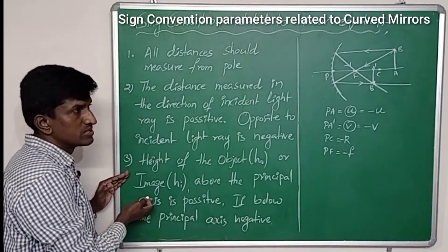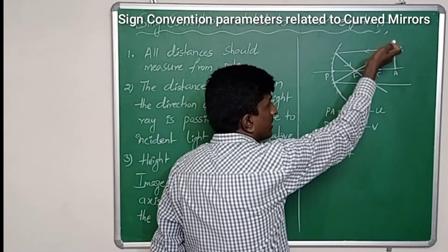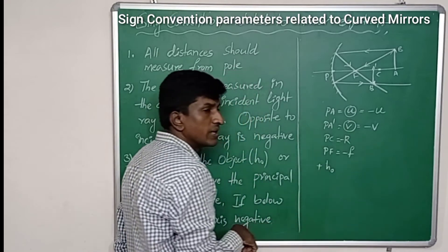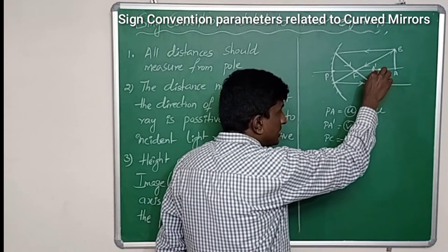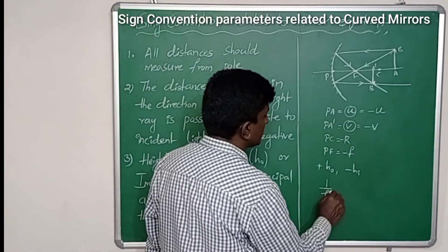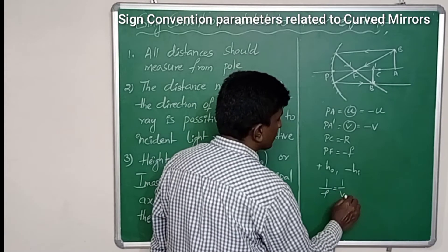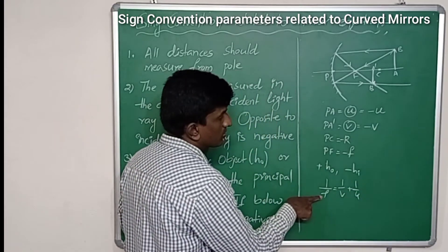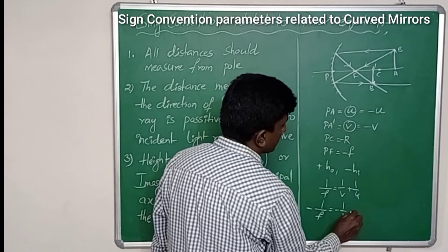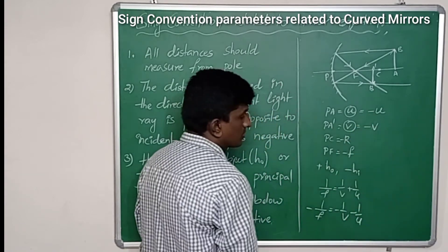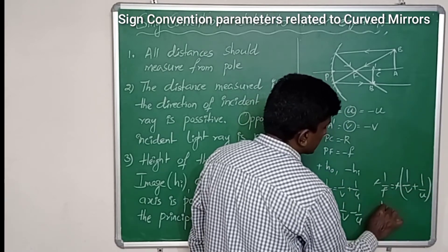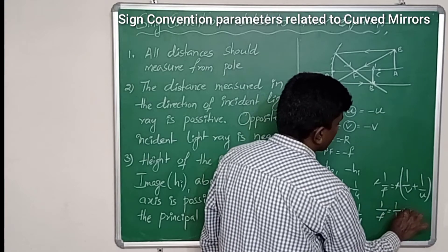For the heights: the object is above the principal axis, so the height of the object h_o is taken as positive. The height of the image is below the principal axis, so it is taken as negative. If you substitute these values in the mirror equation 1/f = 1/v + 1/u, with f as −f, v as −v, and u as −u, taking out the minus sign common gives −1/f = −(1/v + 1/u), and the negatives cancel to give 1/f = 1/v + 1/u. This is the sign convention result for the concave mirror.